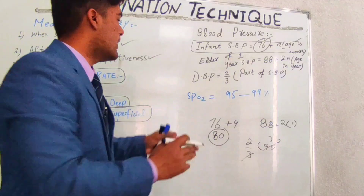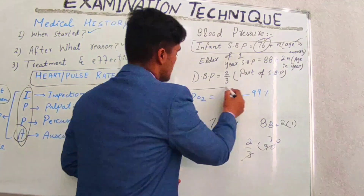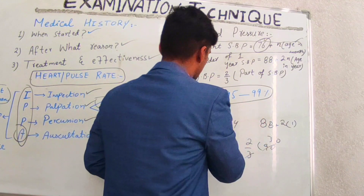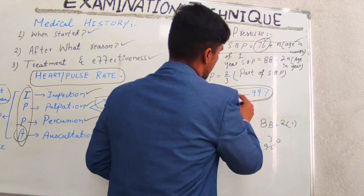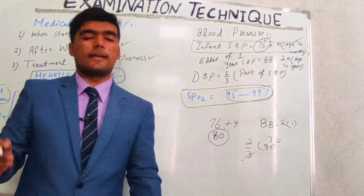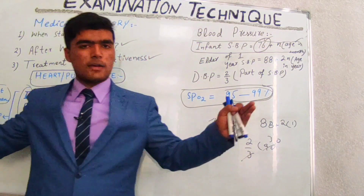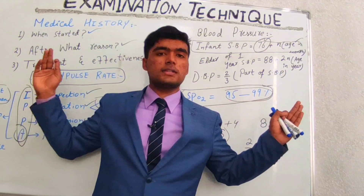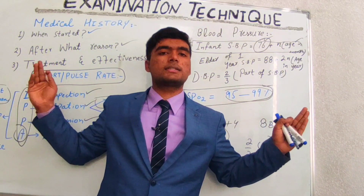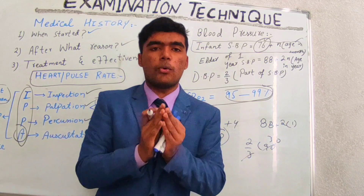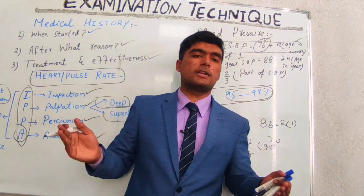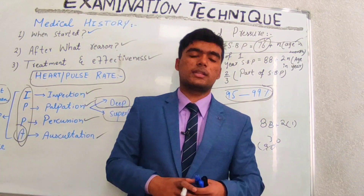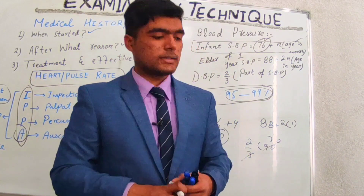Oxygen saturation rate is basically 95 to 99 percent in general. This is our basic examination techniques lecture. Hope you all will get it. Don't forget to subscribe to Medical Lectures by Shujat. Thank you so much.